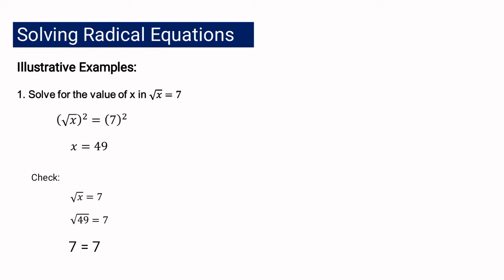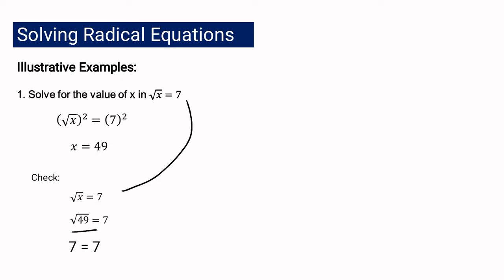Let us check if x equals 49 is correct. Substituting into the original equation: square root of 49 equals 7, and 7 equals 7. Since both sides are equal, x equals 49 is correct.